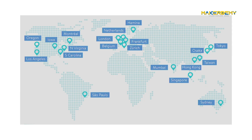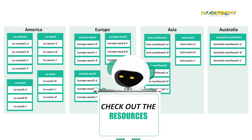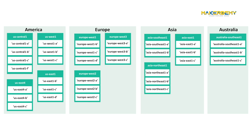Google has distributed their physical resources across the world by building data centers. Each data center location is in a region. There are 22 available regions as of now, which includes Asia, Australia, Europe, North America, and South America. Each region is a collection of zones which are isolated from each other. A zone is identified by a name that combines a letter identifier with the name of the region. For example, Zone B in the East Asia region is named Asia-East1-B. You may want to take a look at the list of regions and zones from the link in the resources, as it will be useful later when we start working on GCP.